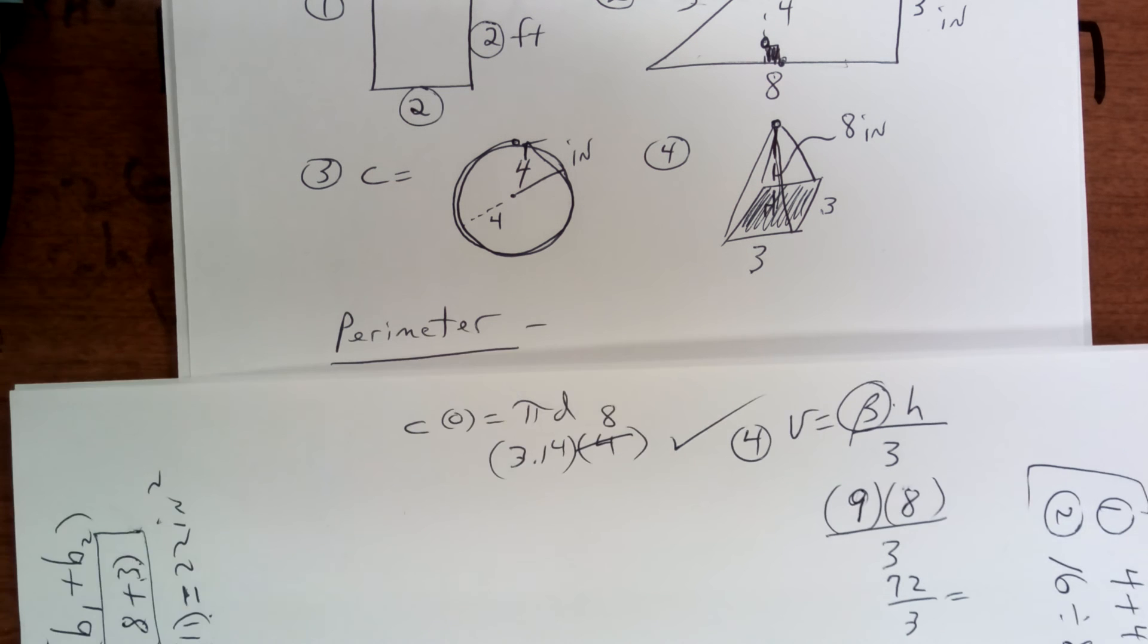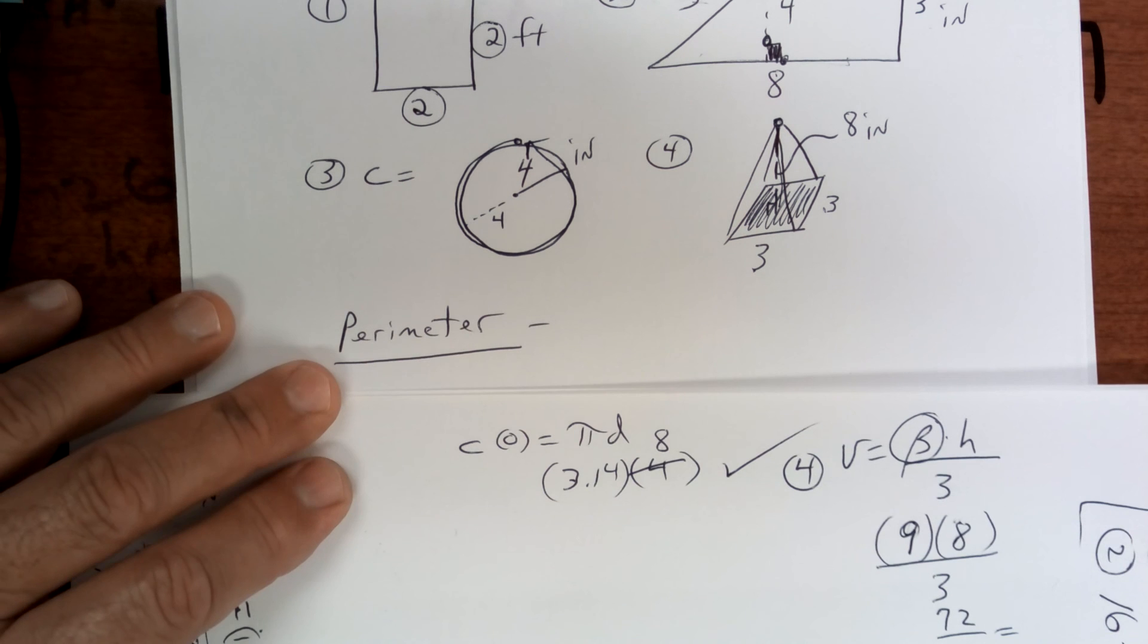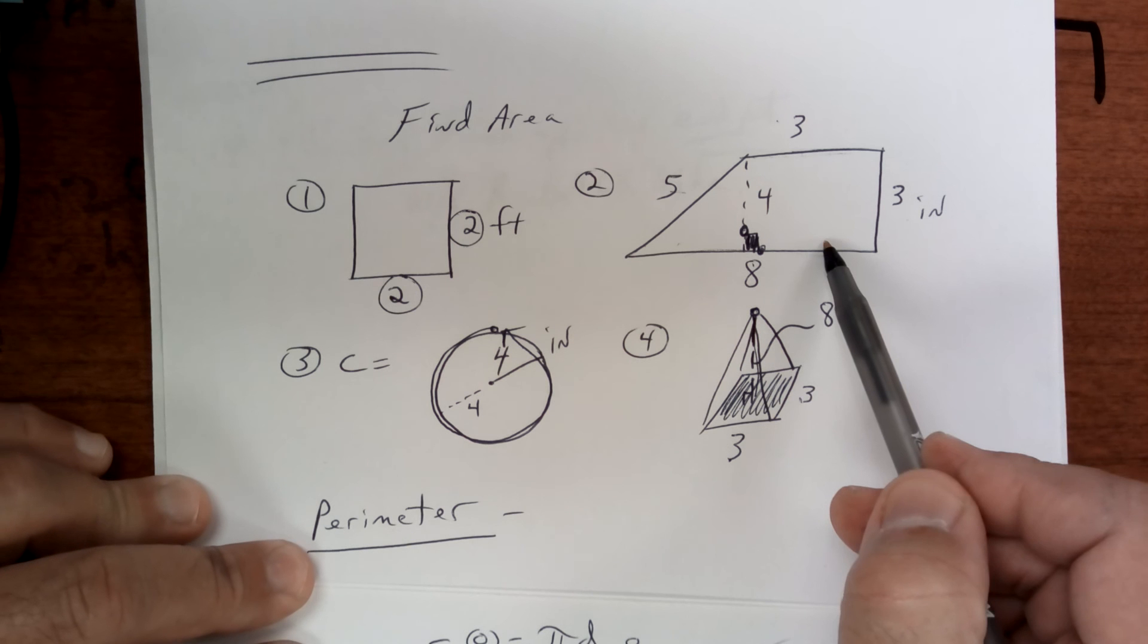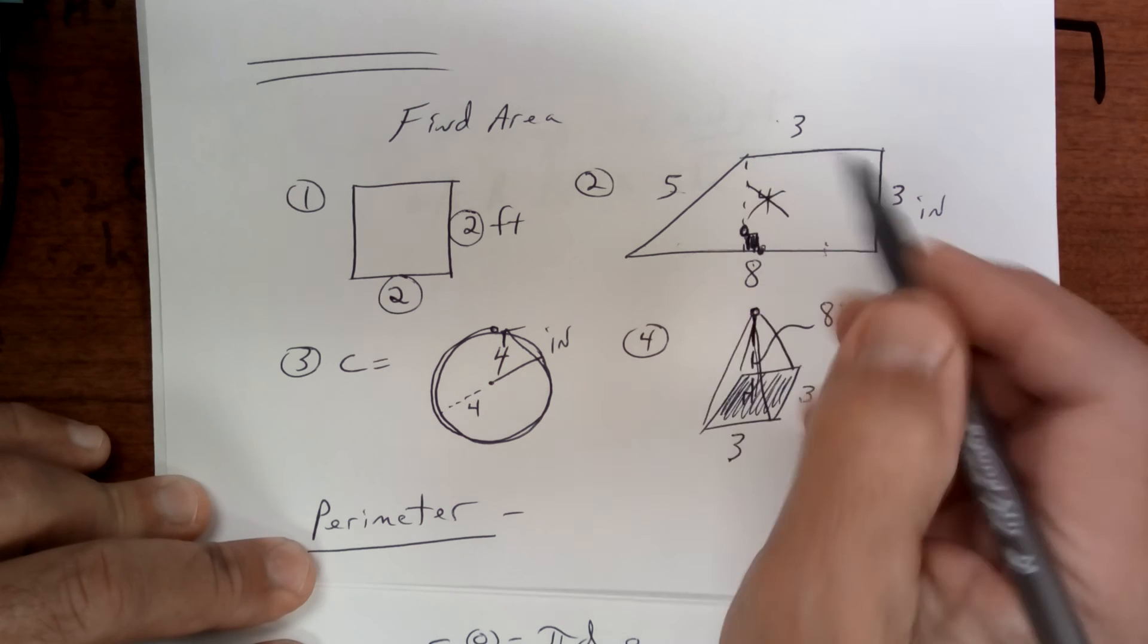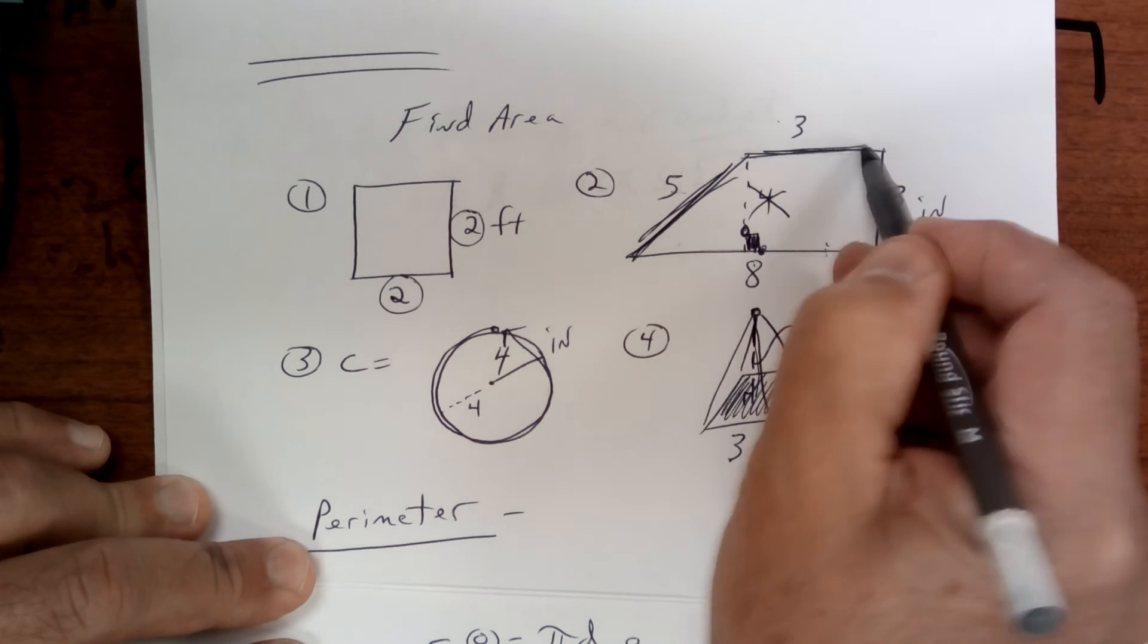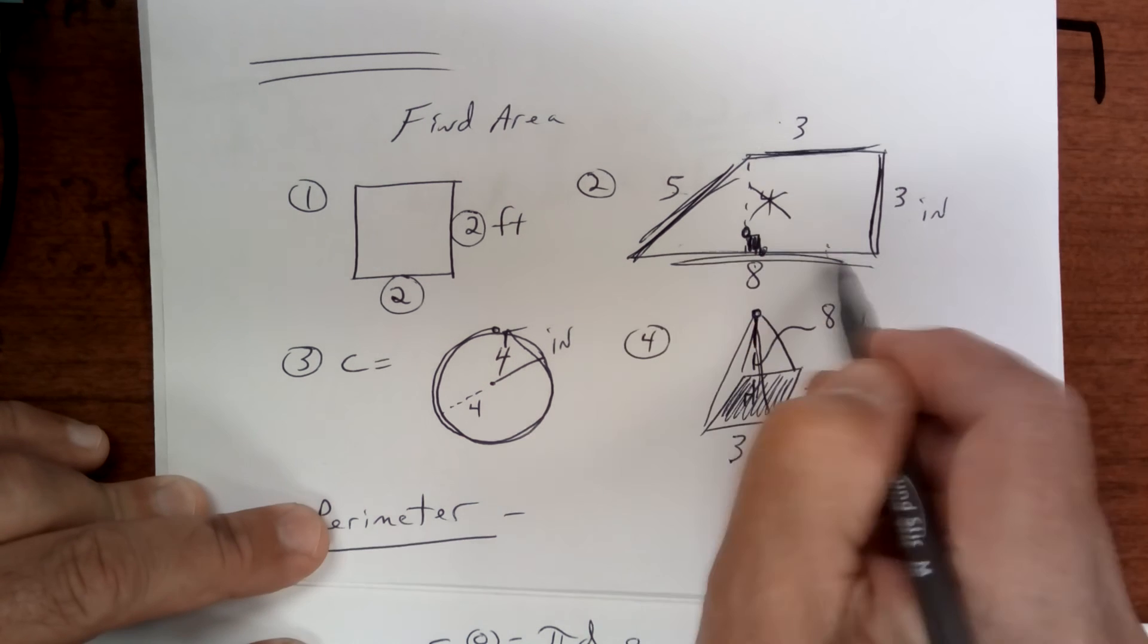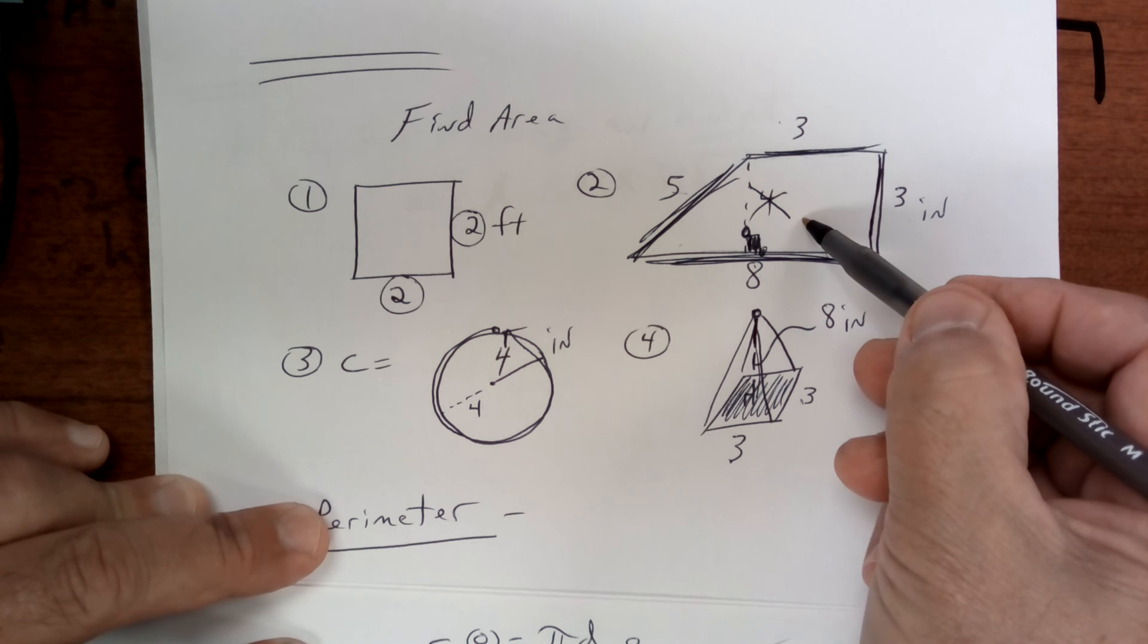All right, perimeter is just the distance around something. So like on this one, if they wanted the perimeter, you wouldn't add the 4. You would just add up this plus this plus this plus this, but not the 4.